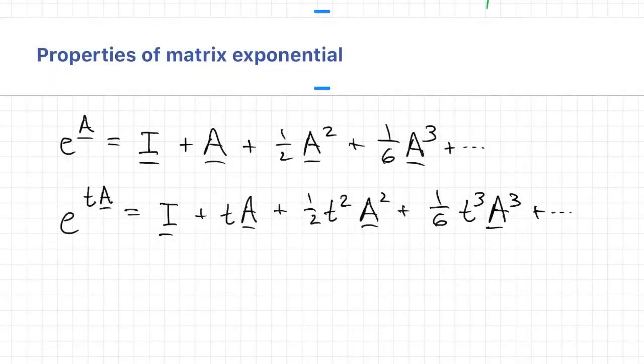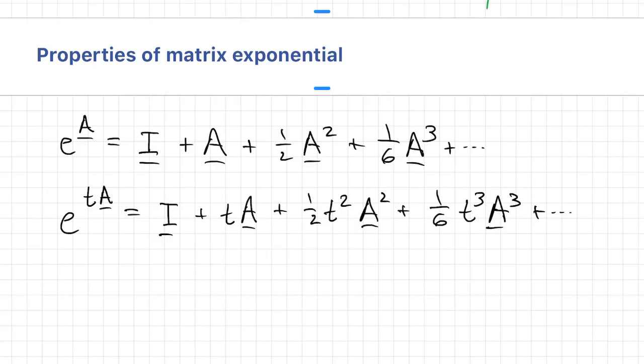Let's go ahead and put a t in as well, since we want to solve time-dependent problems. So this has a number of properties. First of all, e^(tA) equals the identity matrix if t equals zero. Again, identity is the matrix form of 1.